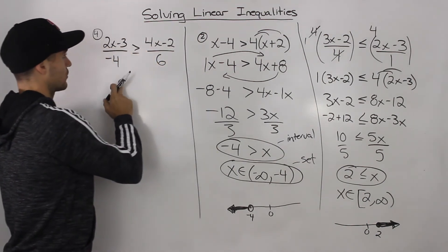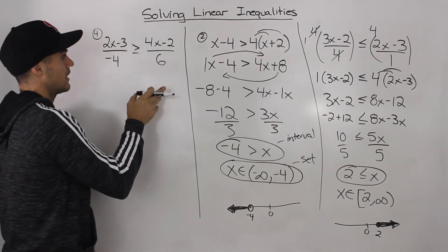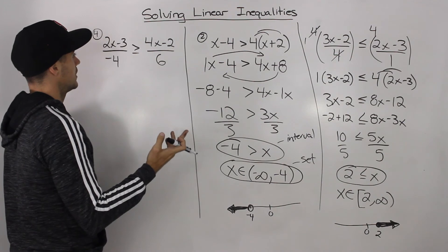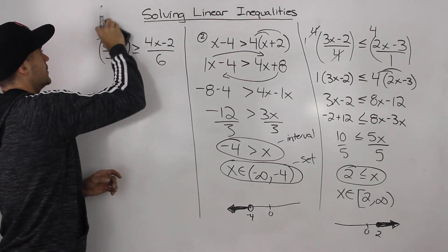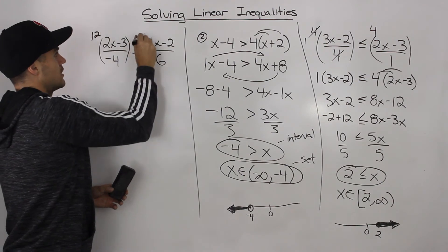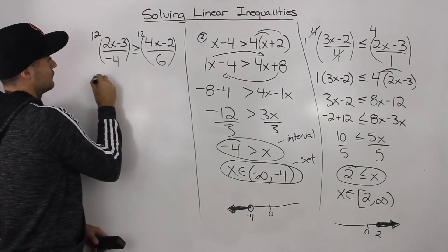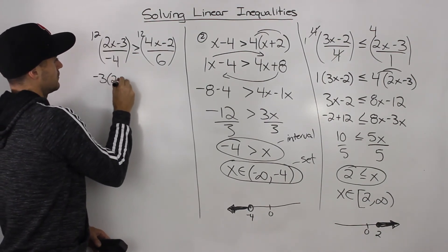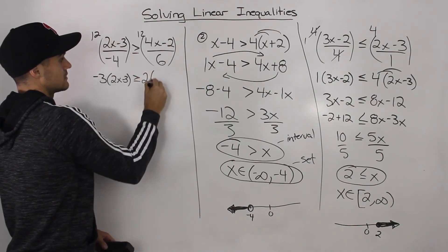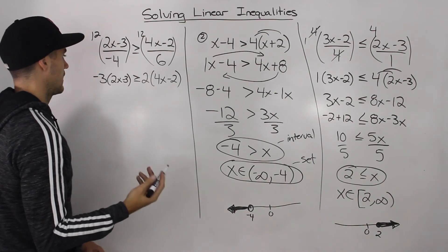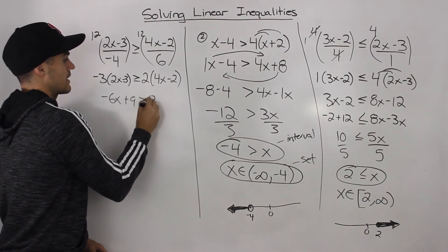Moving on to the last example, the fourth example — very similar to this one. First thing you want to do is get rid of these denominators, multiply by the lowest common denominator. The lowest common denominator between all of these will be 12. You want to make sure that you multiply by a positive so you don't have to worry about flipping that sign. Negative 4 goes into 12 negative 3 times. Then we got 2x minus 3 here, greater than or equal to. 6 goes into 12 twice, then we have 4x minus 2. Expand everything: negative 6x plus 9 is greater than or equal to 8x minus 4.